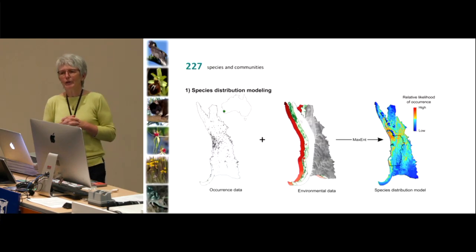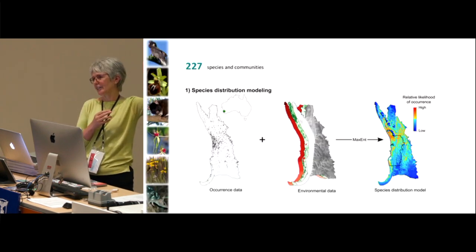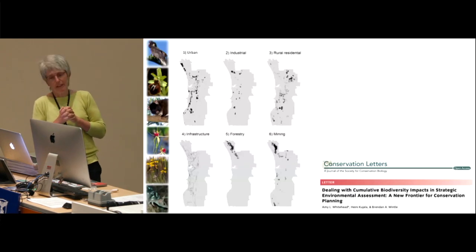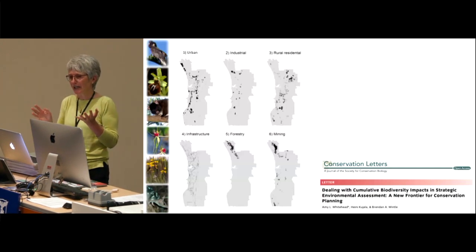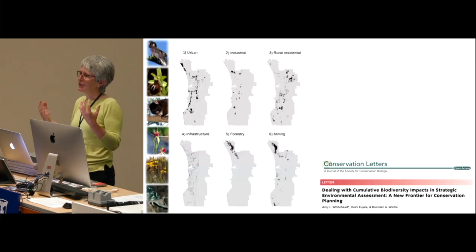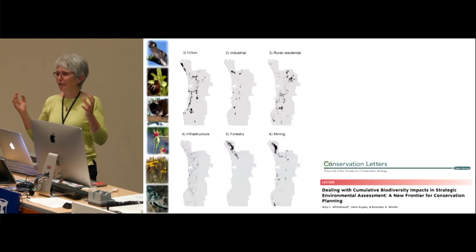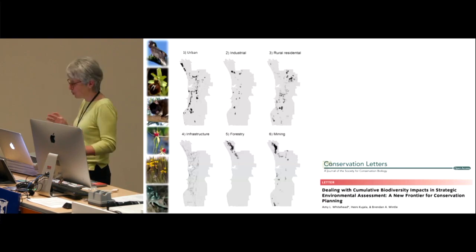The aim was to ask: can we plan future development in a way that minimises impacts on biodiversity? There were 226 species and communities needing attention, and Haini modelled those using open source species occurrence data, open source predictor variables, and free modelling software. They then needed to account for impacts — mapped forecasts for urban expansion, industrial footprints, forestry, and mining — which usually have cumulative effects. These impact data weren't open source but were available from the Perth planning scheme through a trusted partnership.